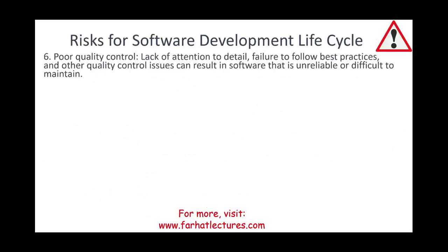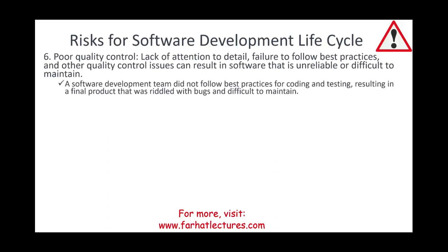Another risk is poor quality control. Failure to pay attention to detail and follow best practices during the development cycle can result in software that is unreliable or difficult to maintain. For example, a software development team that did not follow best practices for coding and testing produced a final product riddled with bugs and difficult to maintain. This causes significant user frustration, is very expensive to fix, and damages reputation.